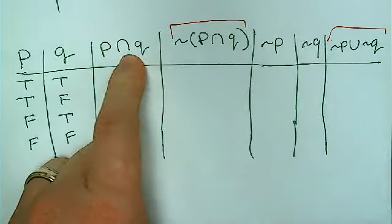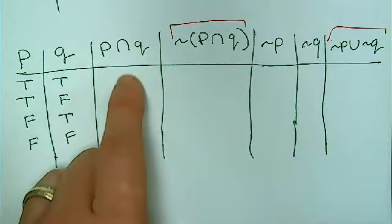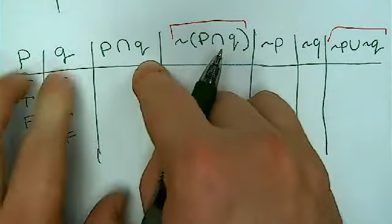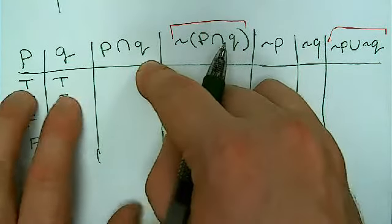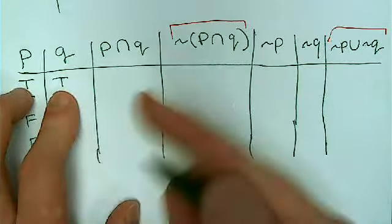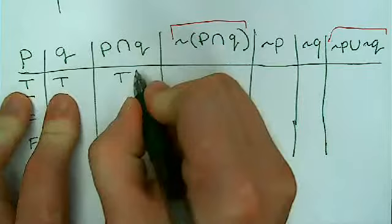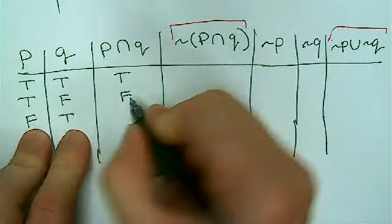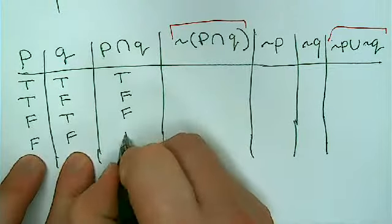What symbol is that one? That's an and. So when I make this column, I'm comparing P and Q. I'm looking at these two. I'm checking to see what I get. Now maybe I've already memorized it. Maybe I want to take time to review it. So I say, alright, true and true, that's true. True and false, that's false. False and true, that's false. False and false, that's false.